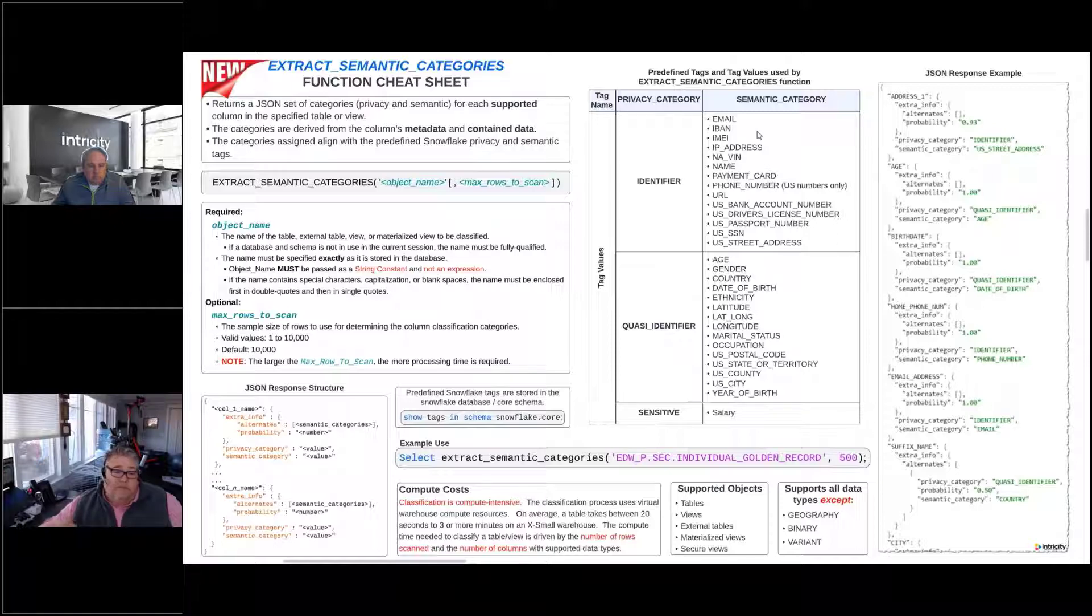If you've got this value, you know who this person is, right? If we've got somebody's social security number, that's all we need. And so these are flagged as identifiers. And then when we look at the semantic_category, it's going to try and actually classify as to which type of identifier that is.